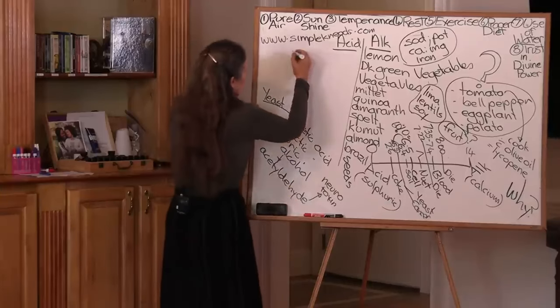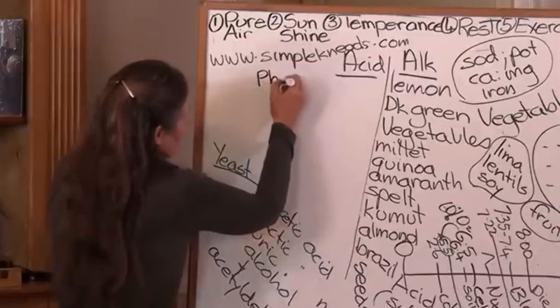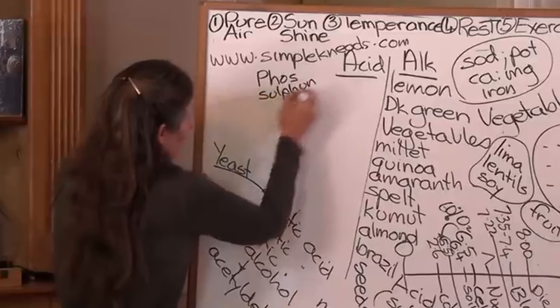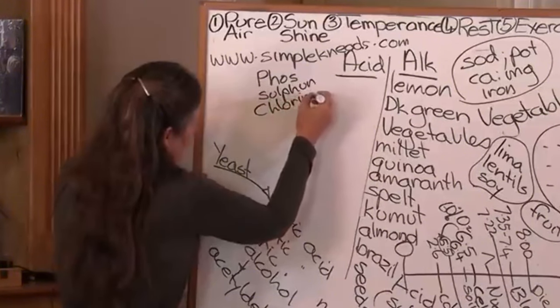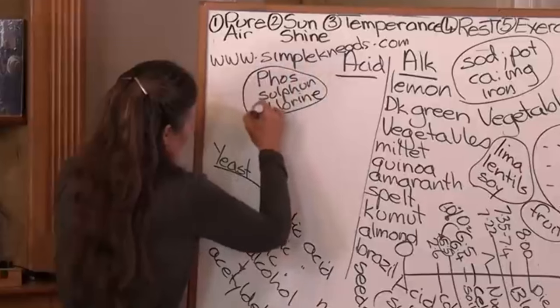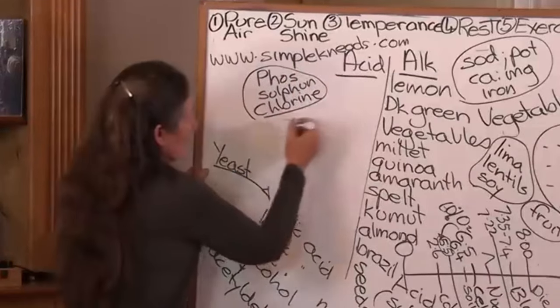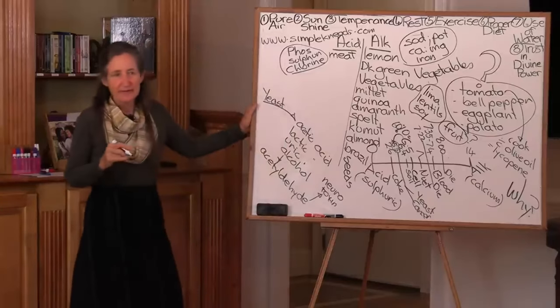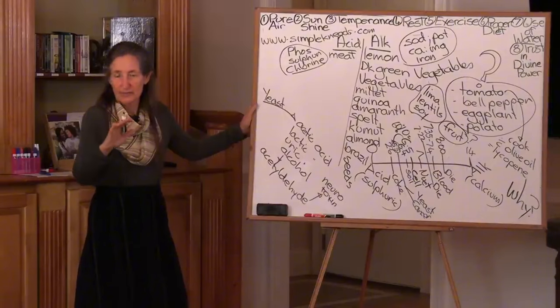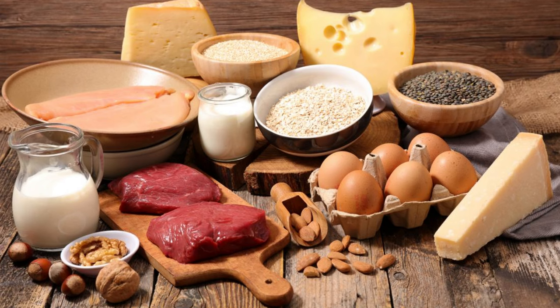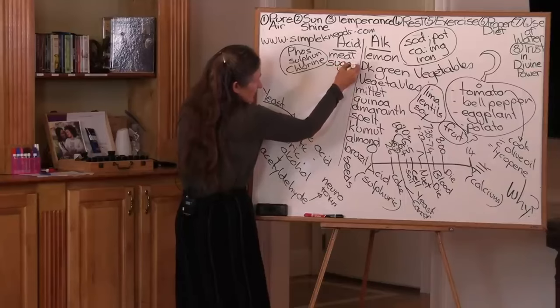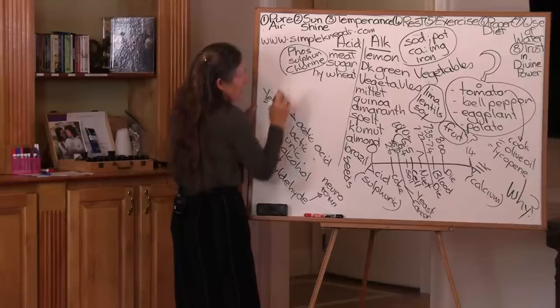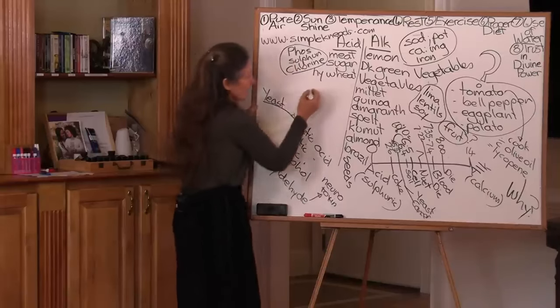Let's have a look at acid forming foods now. These acid forming foods are high in the acid forming minerals, which is phosphorus, sulfur and chlorine. So what foods are high in phosphorus, sulfur and chlorine? Meat. This explains why Dr. Colin Campbell found he could turn cancer cells on and off like a switch by the amount of meat and dairy products he was giving the rats. Refined sugar. It's very acid forming. The hybridized wheat. The hybridization of the wheat created a lot more of the acid forming minerals.